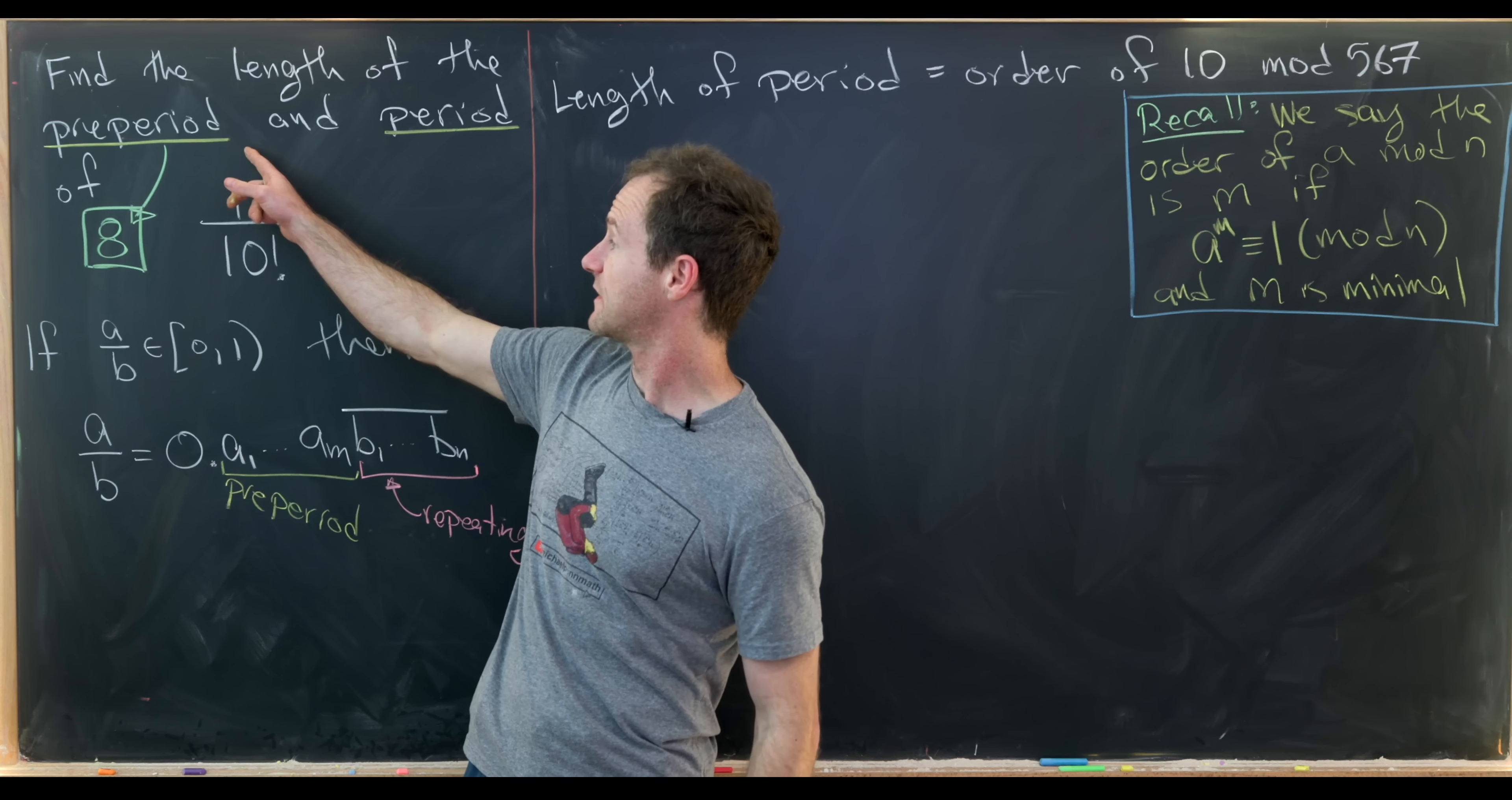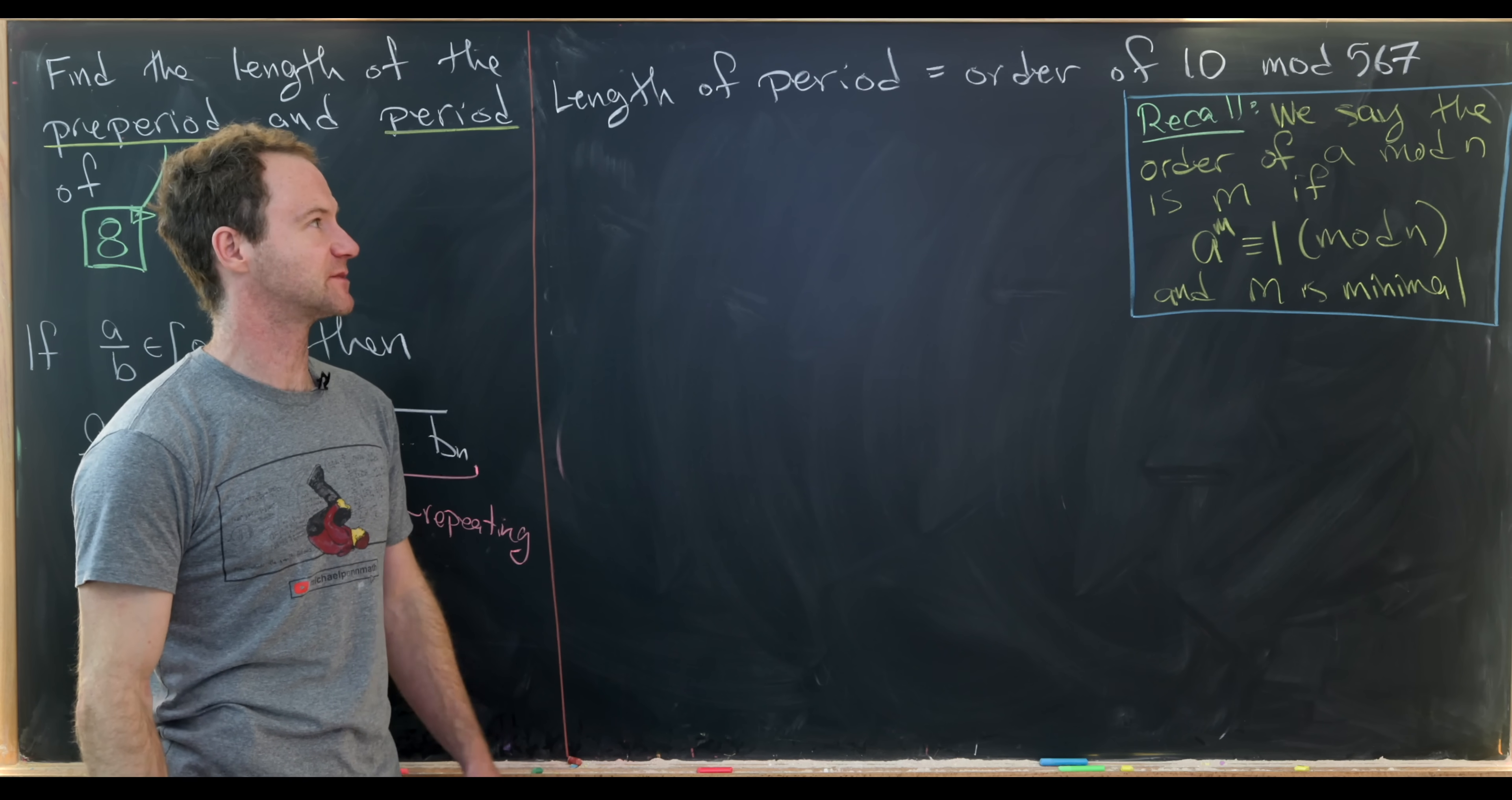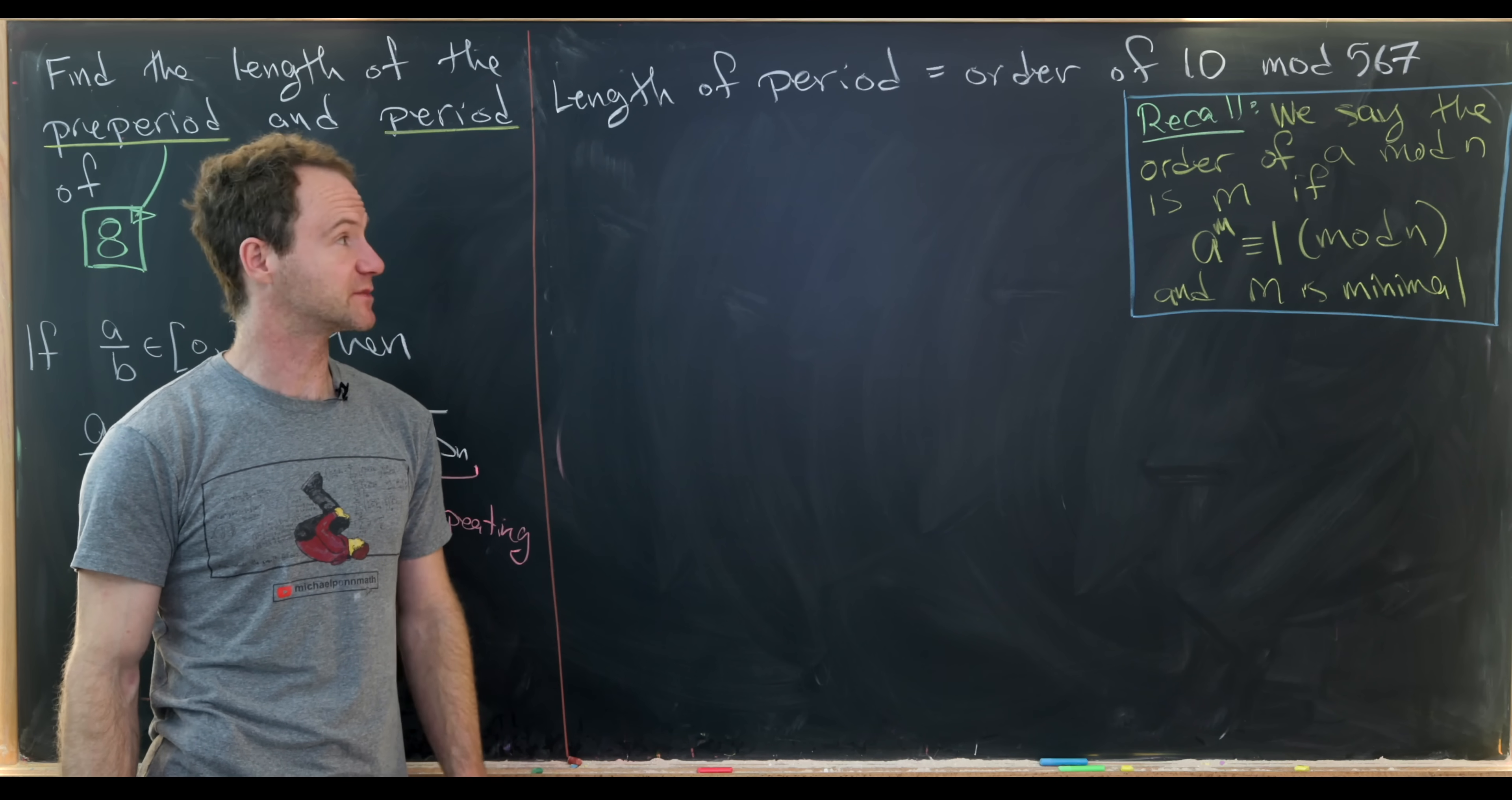So we just calculated the length of the pre-period of 1 over 10 factorial to be 8. Now we'd like to find the length of the period. And by the result from that textbook, that is the order of 10 mod 567. And we calculated why it's 567 on the previous board.